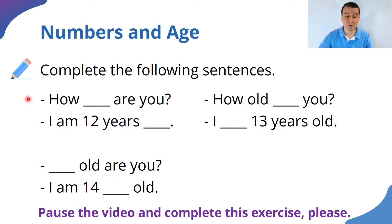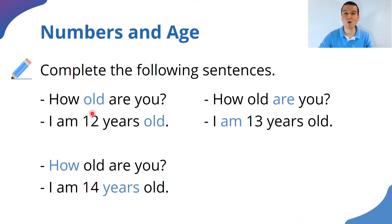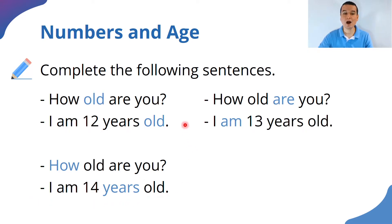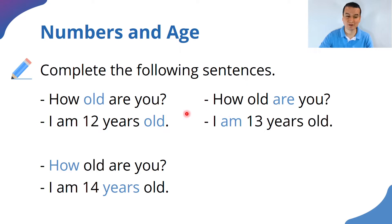Let me show you the answers. The first one: 'How old are you? — I am 12 years old.' Second: 'How old are you? — I am 14 years old.' Third: 'How old are you? — I am 13 years old.' Because they're asking 'How old are you?' and then the other person replies with 'I am X years old.'